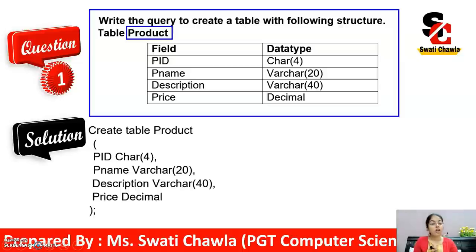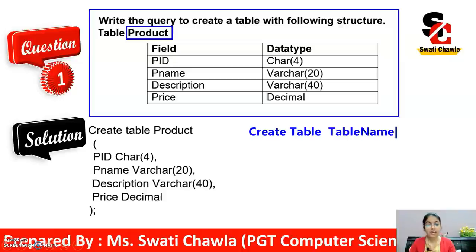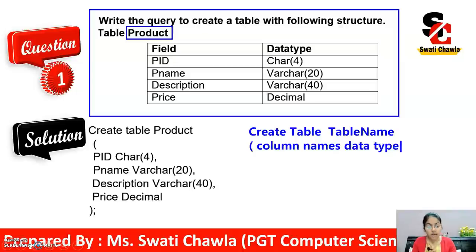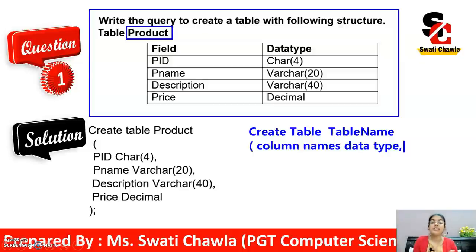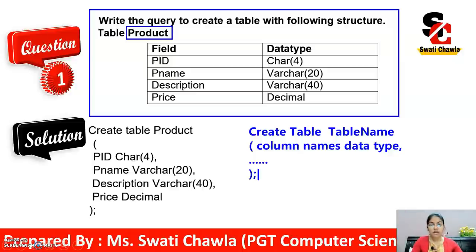According to the structure given, you will have the data types and column names. Based upon that structure, you have to create a table. It's very simple — you write CREATE TABLE, then the table name, then open a bracket, write the column names and their data types. If the data type is not given in the question, you have to analyze the column name to determine it. Then close the bracket and put a semicolon.